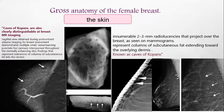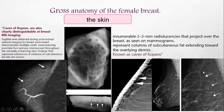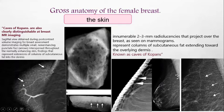We must consider normal variations such as cavities of Copan — hypodermal radiolucencies extending into the dermal skin, seen as small radiolucent areas on mammography, approximately 2 to 3 mm. On a mammography specimen, these are visible, and on MRI they appear as small non-enhancing low-signal areas within otherwise normally enhancing skin. These are normal variants and should not be mistaken for pathology.